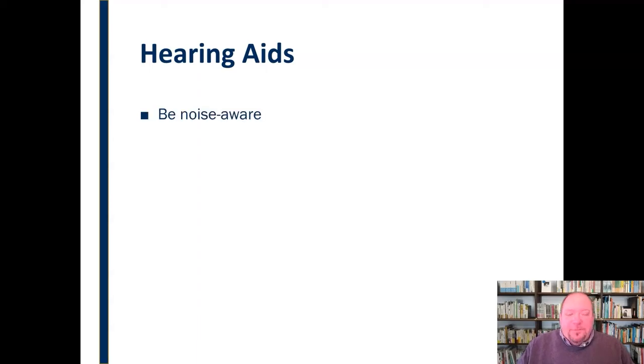The first thing that we can do is to be noise aware. As we talked about in the transactional model of communication, noise is anything that interferes with the sending or receiving of a message. So we can be aware of noise as it exists in the hearing process. There are three basic categories of noise that we can discuss.